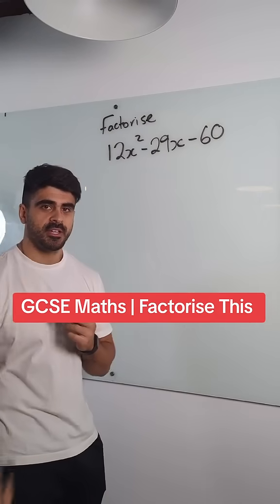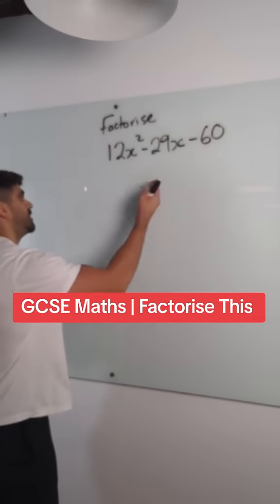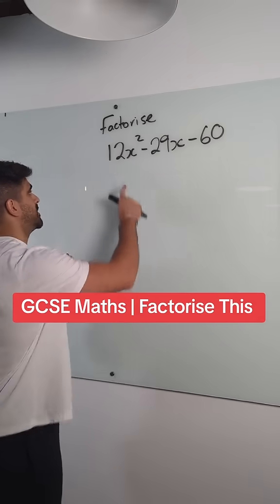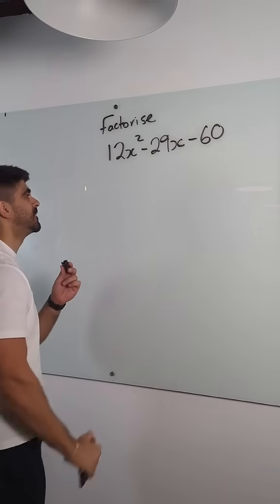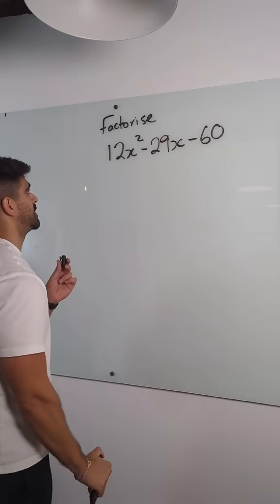If you're still using the AC method, it's not looking good. Why? If you're trying to split the middle term here, when this is 12 and this is 60, you're going to be there for a long time. The whole exam will be spent doing this.